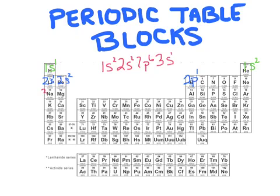We can see that 3s1 is the highest energy electron. Let's go ahead and put that on the periodic table. You may start to see a trend. If we continued down this first column, we'd actually see that everything in this column is going to end with s1. They all have one electron in the s sublevel for their highest energy level electron. We call this first block the s block, because everything in this block has its highest energy level electron in the s sublevel.